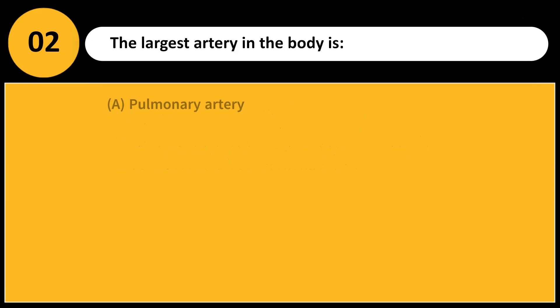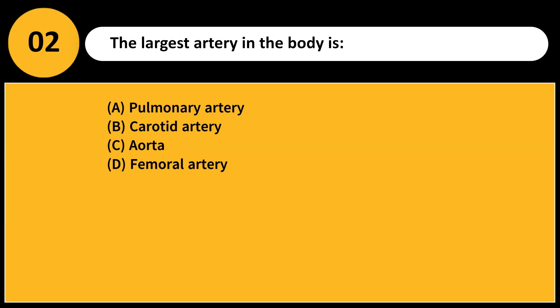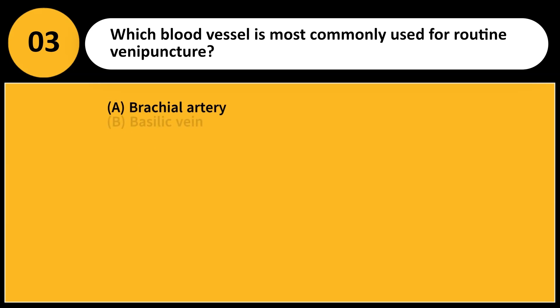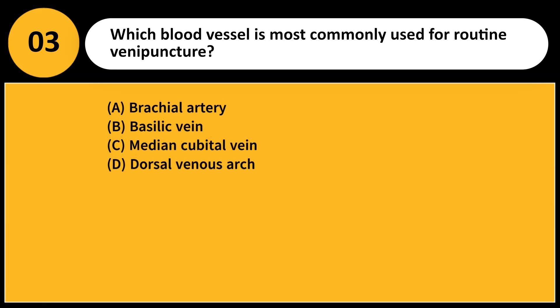The largest artery in the body is: A. Pulmonary artery. B. Carotid artery. C. Aorta. D. Femoral artery. Answer: C. The aorta is the largest artery, responsible for distributing oxygenated blood from the heart.